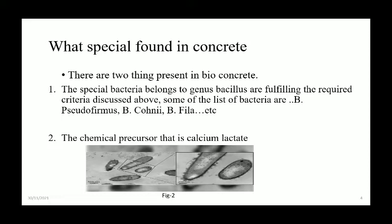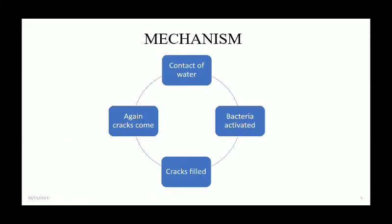What is special found in bio concrete? There are two things present. First, the special bacteria belonging to the genus Bacillus fulfill the required criteria. Some of the bacteria are Pseudomonas, Coniophila, etc. Second, the chemical precursor used is calcium lactate. As shown in figure number two, the bacteria are rod-shaped structures.